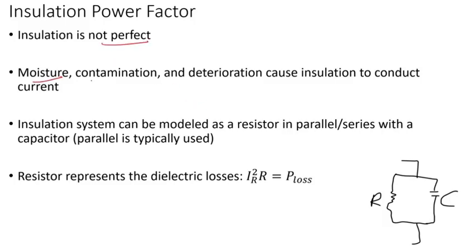There can be moisture and contamination. Insulation deteriorates over time and can cause the insulation to conduct current, otherwise creating a conductive path. The insulation system can be modeled as a resistor in parallel or in series with a capacitor, and typically the parallel model is used.